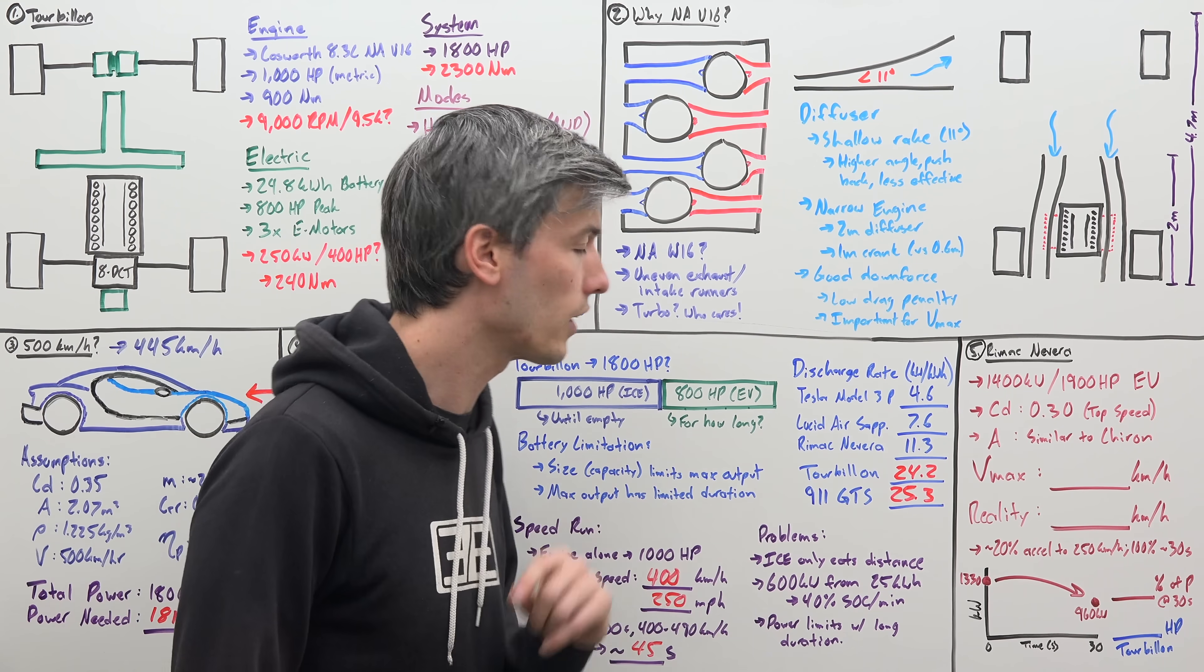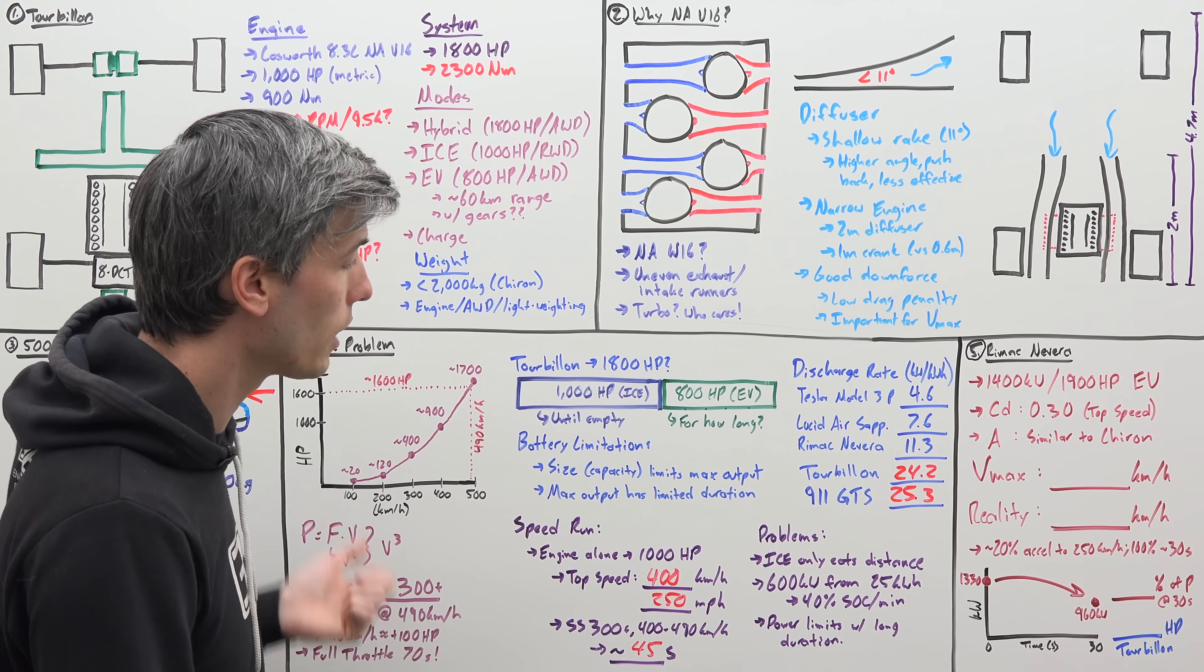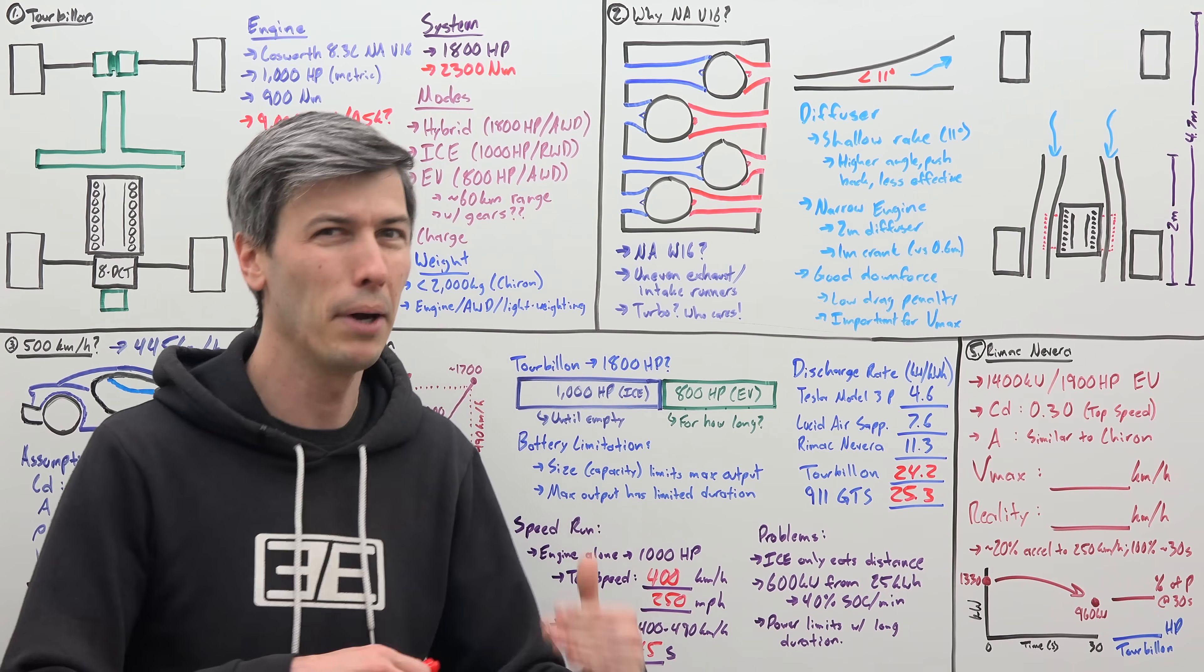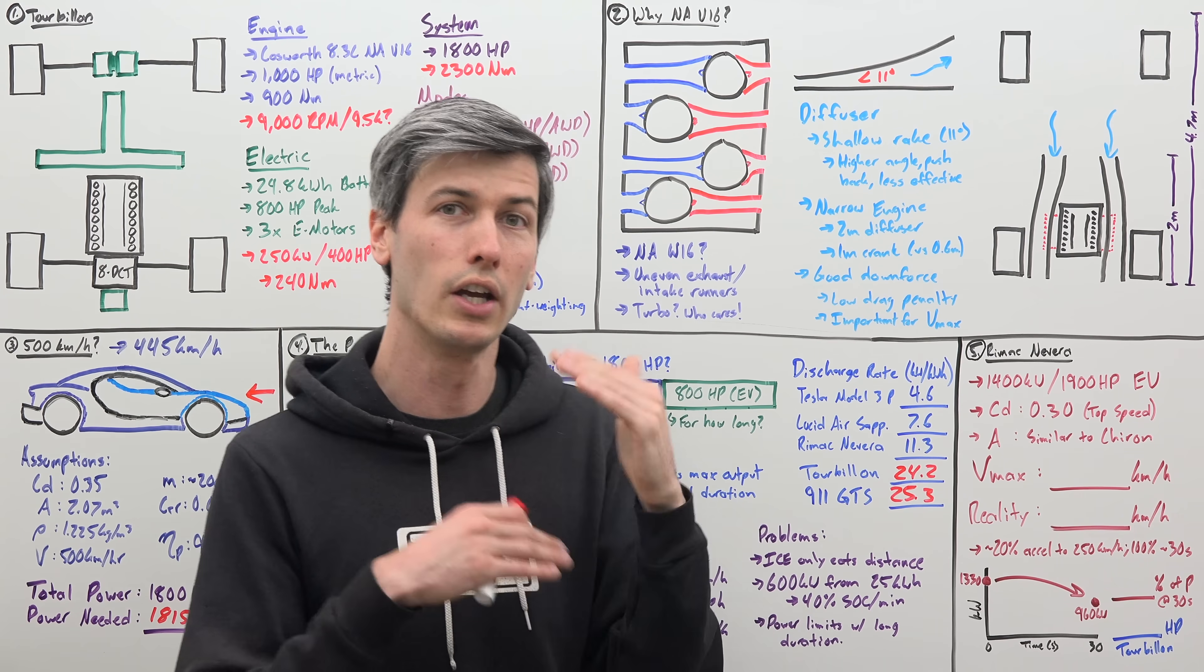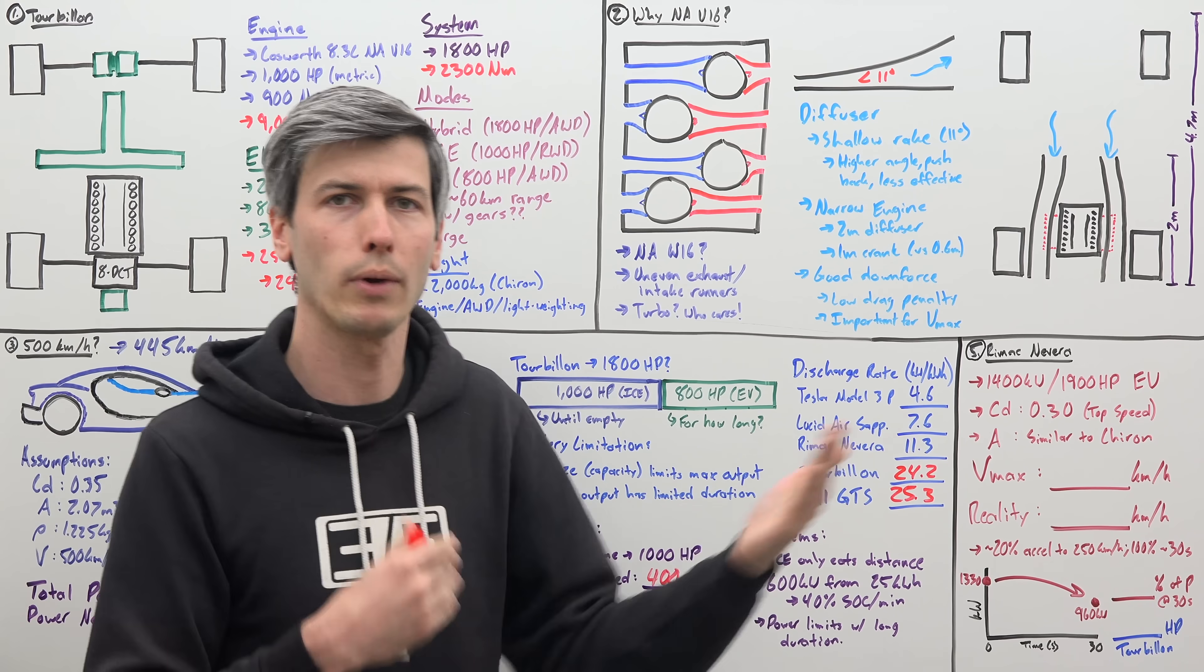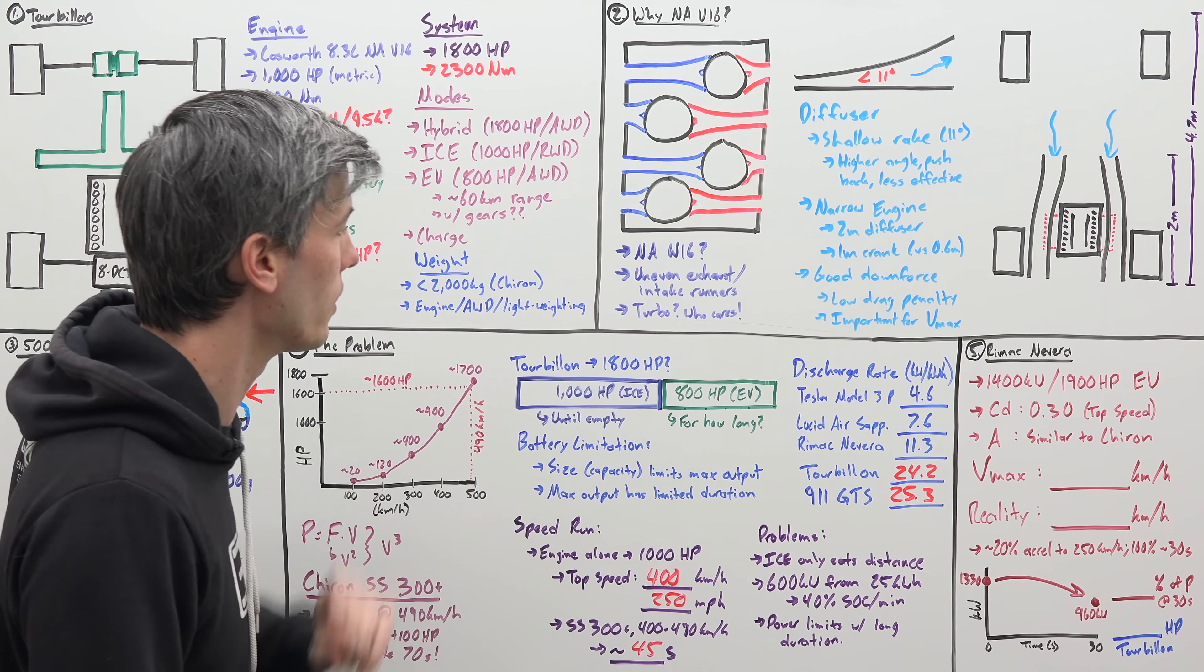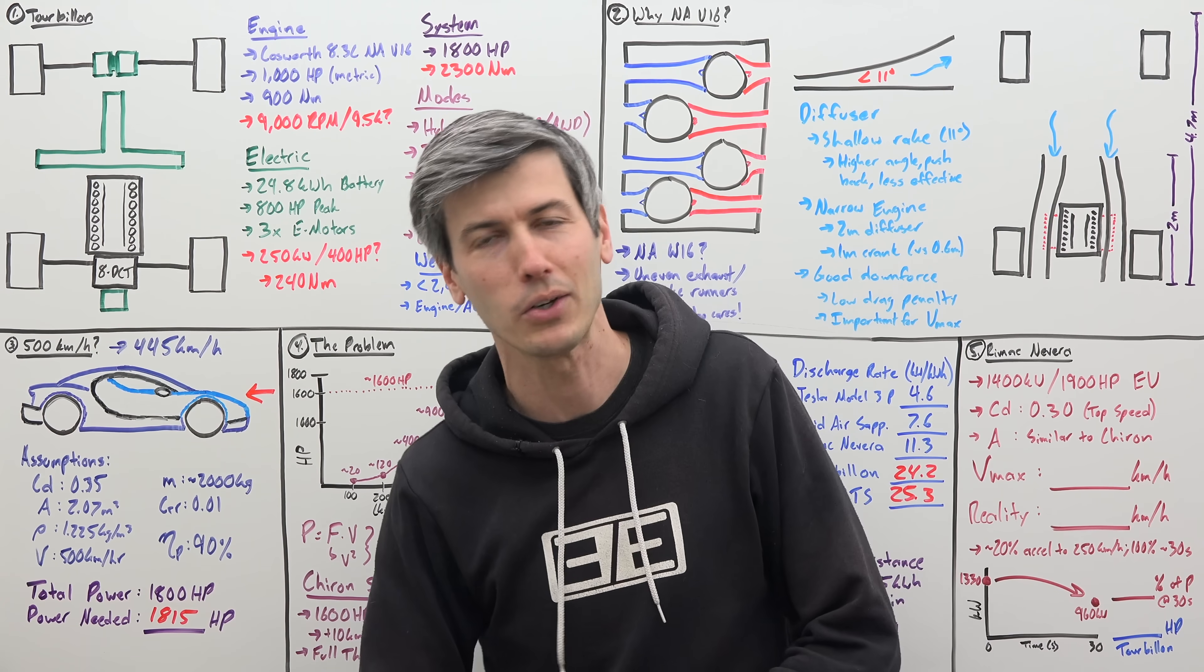Second, if you're taking 600 kilowatts from that battery, this is a 25 kilowatt hour battery, well, that means you're eating 40% of the battery's charge every minute. So you don't have a ton of time, but plenty of time to make a top speed run. But does that mean if you get to those lower percentages of battery state of charge, do you have less power to offer? And finally, you have those power limitations as far as duration. So if you're flooring it for 45 seconds, that power is going to start to come down, which means you're not going to have 1,800 horsepower, which is about what we need in order to hit 500 kilometers per hour.